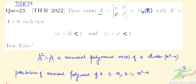Since none of the three cases allow the given conditions to hold, the statement is not true. There cannot exist such a 2×2 matrix. Our conclusion is that the answer is false.